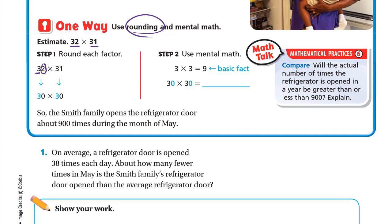So 30 × 30. We multiply 3 × 3, which is 9, and we have two zeros in the factors, so there will also be two zeros in the product — that's 900. So the Smith family opens the refrigerator door about 900 times during the month of May.